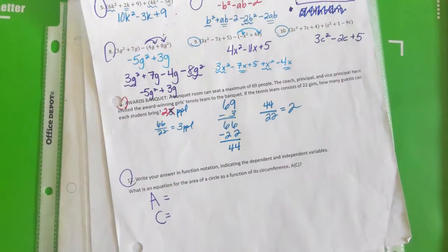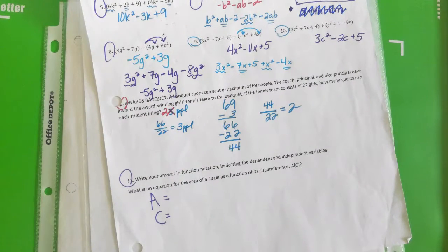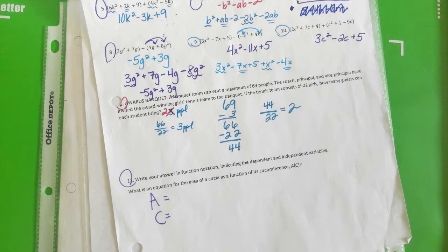Okay, eyes forward. To try to get out of negative point situation, can some group tell me the formula for the area of a circle? Pi R squared. Who said pi R squared?